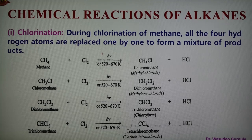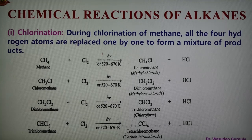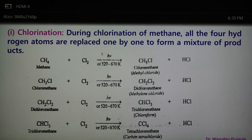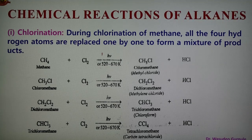The three important substitution reactions are halogenation, sulfonation, and nitration. In halogenation, the alkane reacts with a halogen (F2, Cl2, Br2, or I2) and hydrogen atoms are replaced by halogen atoms. The reactivity order of halogens is: fluorine > chlorine > bromine > iodine. The most important substitution reaction of alkane is halogenation.